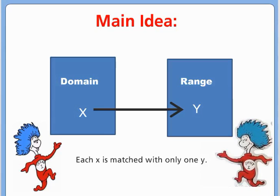The main idea is we have two different sets. Set one, where we take things from, is called the domain. Set two, that we use as our answers and match them to, is called the range. Each x is matched with only one y. Think of a function like a machine — you put an x value in from the domain, and you get one answer out, one thing from the range.